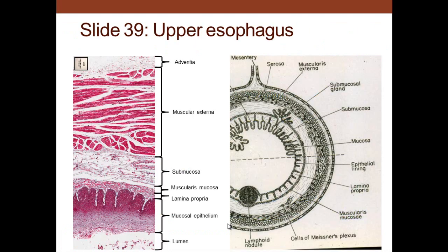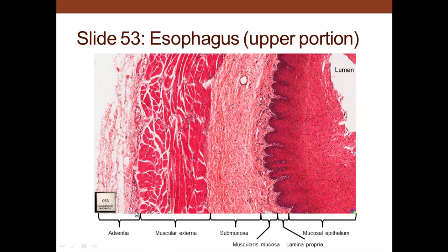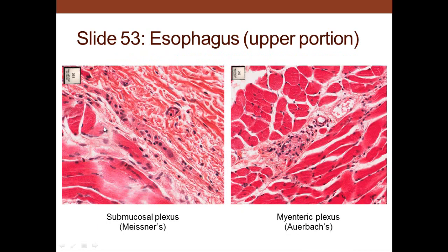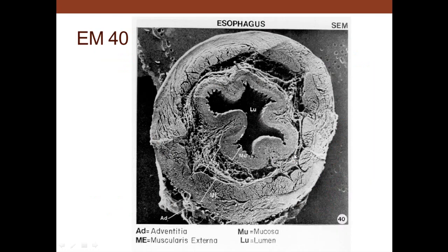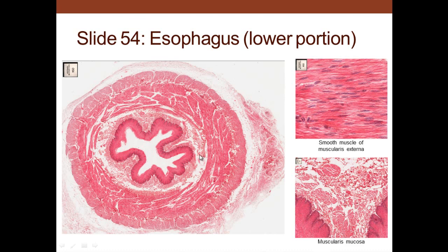Looking at the esophagus: in the upper part you don't have a serosa — instead you have an adventitia, where the structure is firmly attached to the surrounding wall, as opposed to a serosa with mesothelium that allows sliding and movement of the gut. The layers are muscularis externa, submucosa, and mucosa — which is muscularis mucosa, lamina propria, and epithelium. The epithelium is stratified squamous non-keratinized. Meissner's plexus and Auerbach's plexus are both located in the esophagus.